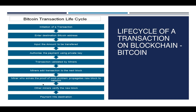Basically, Bitcoin is a currency transfer platform. A peer initiates a transaction, entering the destination Bitcoin address and the amount to be transferred. After that, it authorizes the payment using a private key. This transaction must then be validated by the miners.